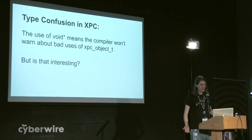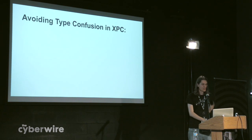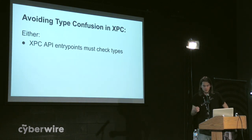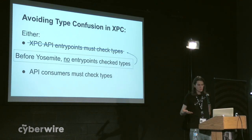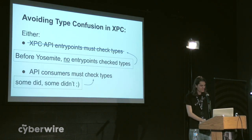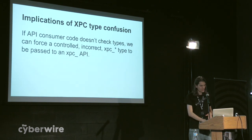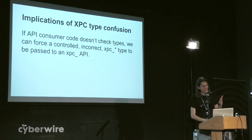Why is this interesting? There are a couple of reasons it might not be: it might be the case that all of those XPC API entry points check all of the types passed. Before Yosemite, absolutely no entry points checked any of the types — it was all left up to the developer. And do all the API consumers check the types all the time? Some do, but the majority didn't. This means we can pass the wrong XPC type to an API which is expecting a different type.